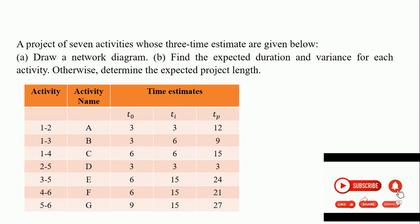A project of seven activities whose three time estimates are given as shown in this table. You are expected to draw a network diagram and find the expected duration and variance for each activity. The structure of the question having T0, the most optimistic time, TI, the most likely time, and TP, the most pessimistic time, has already given us a hint that this is under program evaluation review technique.